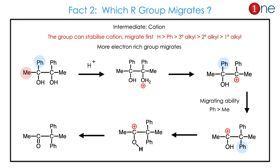Let us look at the next fact: which R group migrates? There can be different R groups on the same carbon — for example, methyl and phenyl. The electron-rich group migrates because the cation is the intermediate. The migratory order is: H > aryl > tertiary > secondary > primary. Hydrogen comes first due to high electron density. Here, the cation is formed and phenyl migrates since its migrating ability is higher. So the final product is the ketone. Migrating ability is always decided by electron richness.